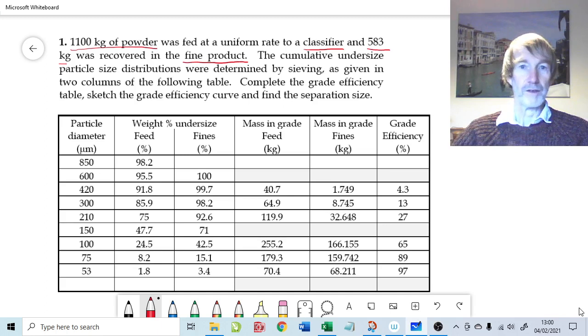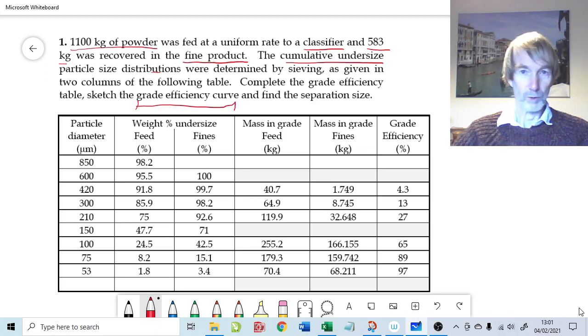The cumulative undersized particle distribution, that's the data we have just here. It's a sieve analysis so they're weight distributions, n3x by our normal method. In this table we have the particle diameter, which would be the sieve size. Then we have the weight percentage undersize of the feed material and in the next column the fine material. By way of example, 98.2 percent of the distribution is less than 850 microns. In other words 1.8 percent of the distribution is greater than 850 microns.